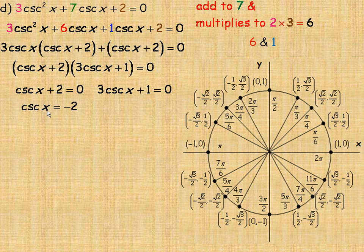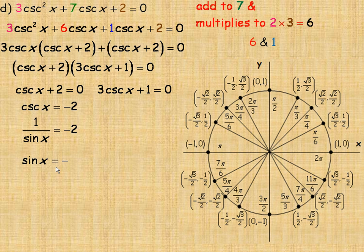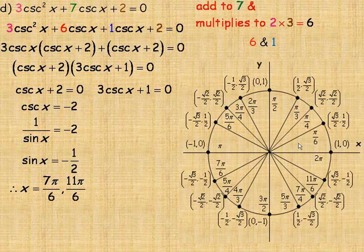From csc x + 2 = 0, csc x = negative 2. Using the reciprocal identity, csc x = 1/sin x, so 1/sin x = negative 2, which means sin x = negative 1/2. On the unit circle, sine is negative in the third and fourth quadrants, so sine equals negative 1/2 at 7π over 6 and 11π over 6.